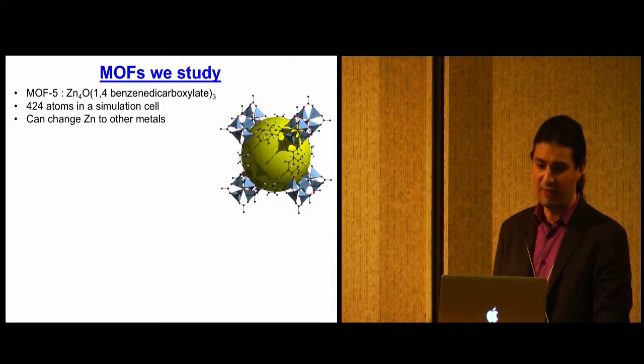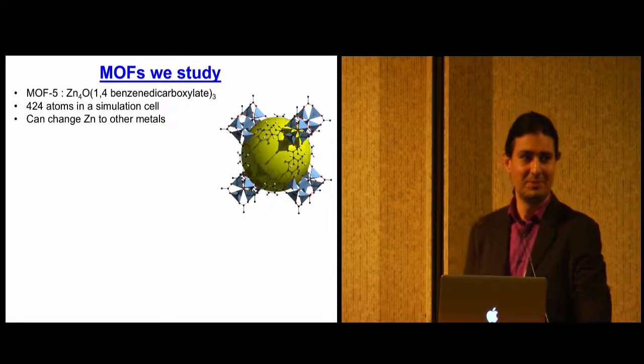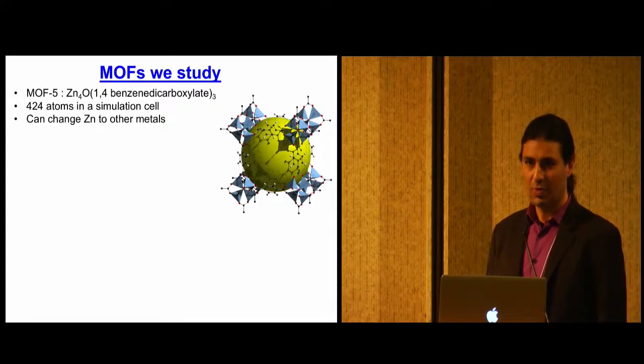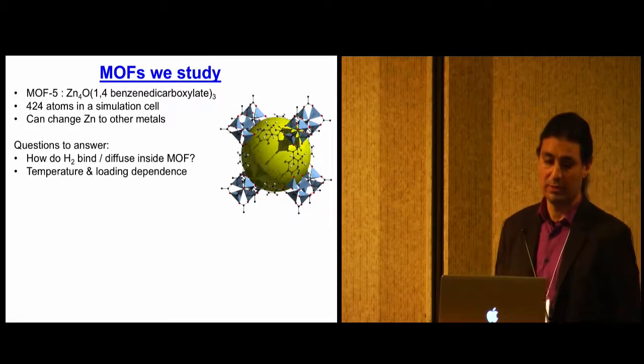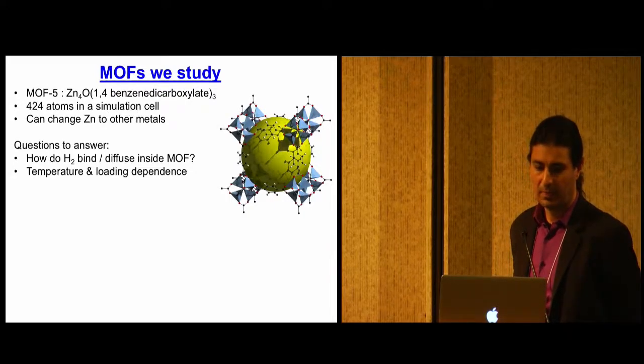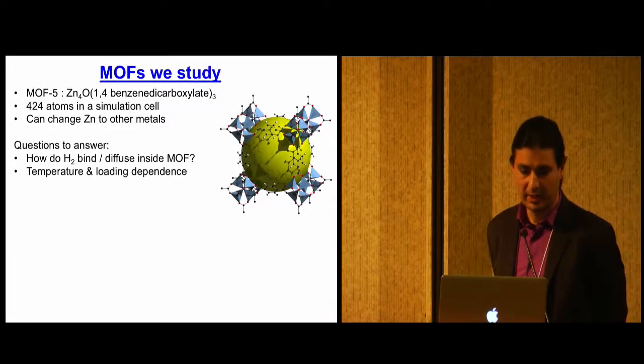We're studying this thing called MOF-5, which has this wonderful chemical name. Simulation cell, which is the smallest you can reasonably describe it, has 424 atoms in it. And you can change the zinc to other materials. Questions. How do the H2 bind and then diffuse inside? What's the temperature and loading dependence? These are very practical questions we'd like to know.